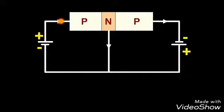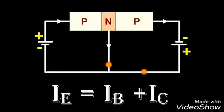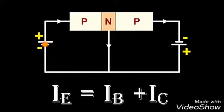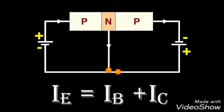the emitter current is the sum of the collector current and the base current — that is, IE is equal to IB plus IC. This equation is the fundamental relation between the currents in a transistor circuit, and is true regardless of transistor type or transistor configuration.